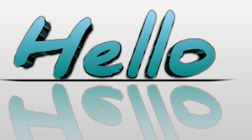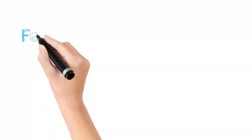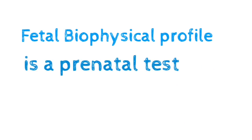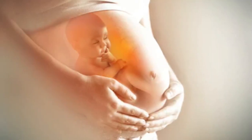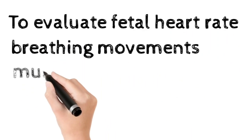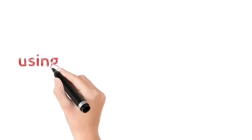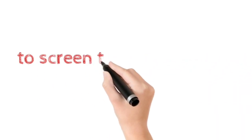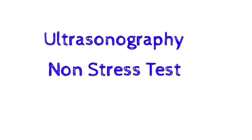In this video, I'm going to discuss fetal biophysical profile or BPP scoring. Fetal biophysical profile is a prenatal test done during pregnancy to check fetal well-being — that is, the health status of the fetus. Here we evaluate the baby's heart rate, breathing movements, muscle tone, and amniotic fluid level. This test combines two procedures to detect abnormality or fetal health status.